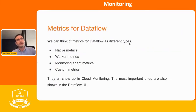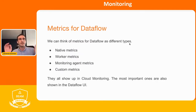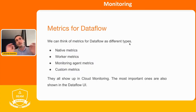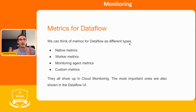You can think of metrics in Dataflow in broadly four types: the native metrics, which are really metrics about your job; the worker metrics, which are metrics about the workers running your jobs; then something called monitoring agent metrics; and finally custom metrics. I will show each of them to you.